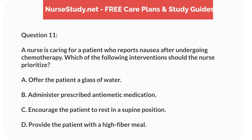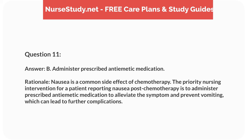Question 11. A nurse is caring for a patient who reports nausea after undergoing chemotherapy. Which of the following interventions should the nurse prioritize? A. Offer the patient a glass of water. B. Administer prescribed anti-emetic medication. C. Encourage the patient to rest in a supine position. D. Provide the patient with a high-fiber meal. Answer: B. Administer prescribed anti-emetic medication. Rationale: Nausea is a common side effect of chemotherapy. The priority nursing intervention for a patient reporting nausea post-chemotherapy is to administer prescribed anti-emetic medication to alleviate the symptom and prevent vomiting, which can lead to further complications.